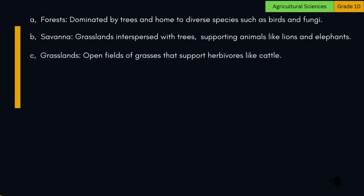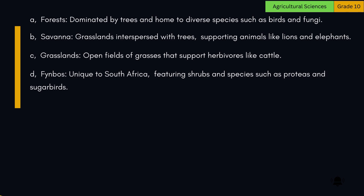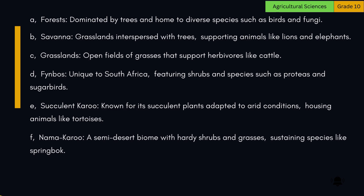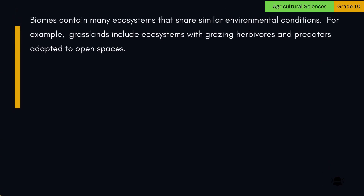Further biome examples include: Grasslands — open fields of grasses that support herbivores like cattle; Fynbos — unique to South Africa, featuring shrubs and species such as proteas and sugarbirds; Succulent Karoo — known for its succulent plants adapted to arid conditions, housing animals like tortoises; Nama Karoo — a semi-desert biome with hardy shrubs and grasses, sustaining species like springbok; and Thicket — dense vegetation areas providing habitats for various animals and birds. Biomes contain many ecosystems that share similar environmental conditions, such as grasslands with grazing herbivores and predators adapted to open spaces.